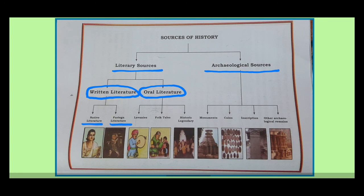Written literature is further divided into native literature and foreign literature. Native literature is the literature created by Indians, while foreign literature is created by foreigners or visitors. Oral literature is again divided into lavnis, folk tales, and historical legendaries — stories of great leaders and folk songs are considered oral literature.